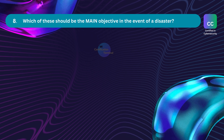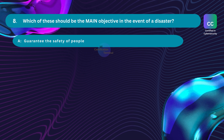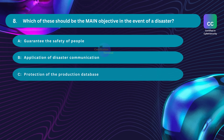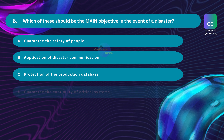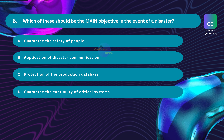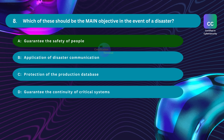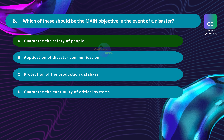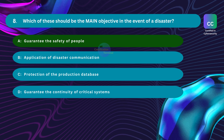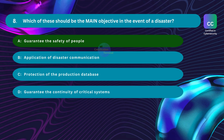Question number 8. Which of these should be the main objective in the event of a disaster? Option A: guarantee the safety of people. Option B: application of disaster communication. Option C: protection of the production database. Option D: guarantee the continuity of critical systems. The correct answer is Option A: guarantee the safety of people. While disaster recovery and business continuity are crucial for organizational resilience, they should never supersede the safety and well-being of individuals. Prioritizing human life in emergencies establishes a foundation for effective response, community support, and eventual recovery from the disaster's impact.